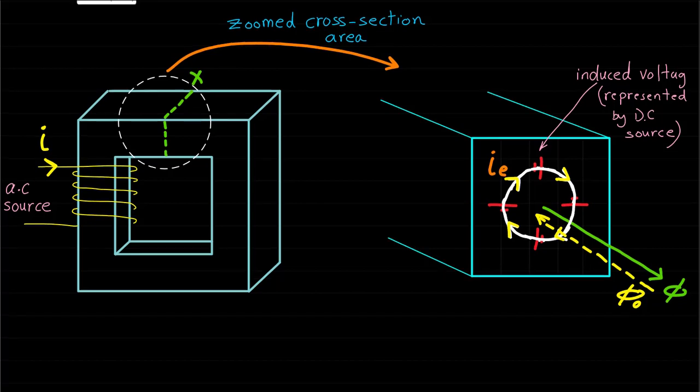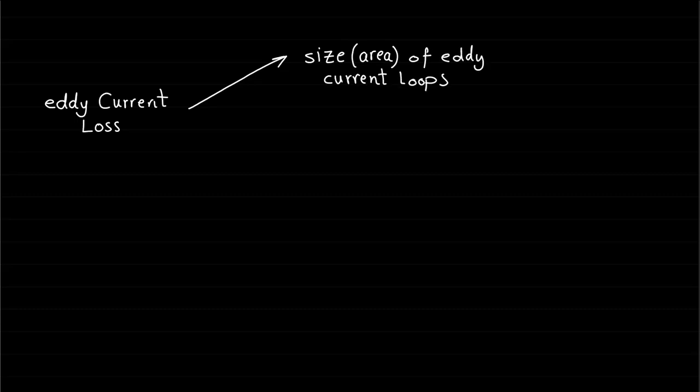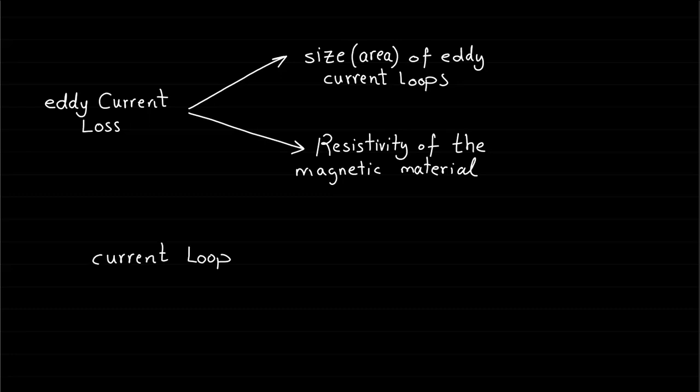Therefore, the induced voltage that causes the eddy current must be in this direction. The amount of energy lost due to the eddy currents depends on the size of the eddy current loops and the resistivity of the material. The larger the induced voltage, the larger the current loop size and therefore greater the I squared R losses will be.